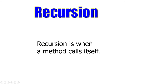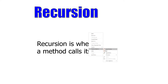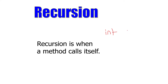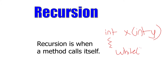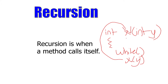So what exactly is recursion? Recursion is when a method calls itself. To show what that means: you can have a method like int x with a parameter, and then inside your method you can have a call to itself. You wouldn't use a while loop with that since you already have a loop with recursion. But anyway, that's just a really basic example.